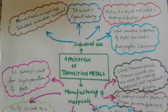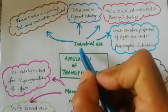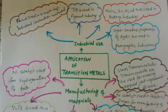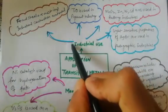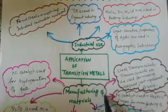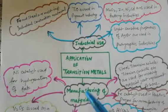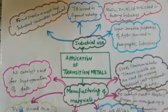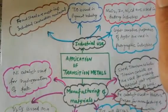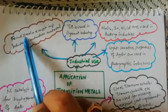Now we look at applications of transition metals in daily life. I have divided all applications into two basic categories: industrial use and manufacturing use. Transition metals are also used as catalysts. In industrial use, iron and steel are the most important — used in construction of materials, and many kitchen utensils in daily life are made from iron or steel.